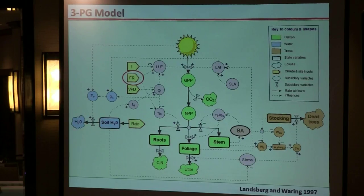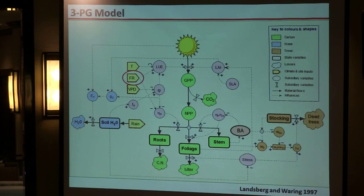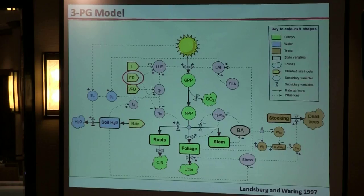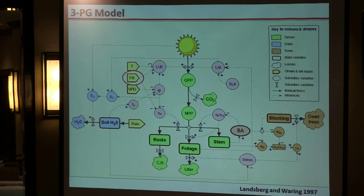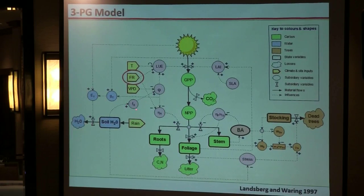There is a water balance sub-module where rainfall is the input. The model calculates a soil water balance after accounting for evapotranspiration, using canopy conductance to drive the amount of evapotranspiration. Canopy conductance is calculated from leaf area index and environmental parameters including temperature, stand nutrition or fertility, and vapor pressure deficit, which also affects light-use efficiency, allocation, and the water balance.